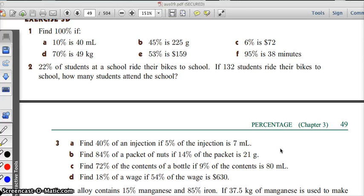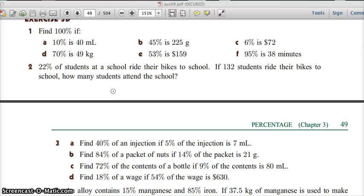So here we go. We've got a question here. Find a hundred percent if ten percent is forty mils. So this is quite easy. Forty mils is worth ten percent. And if we divide forty by ten, we get four. So for every one percent, that is four mils. Every one percent. So a hundred percent must be that times a hundred. Four times a hundred.